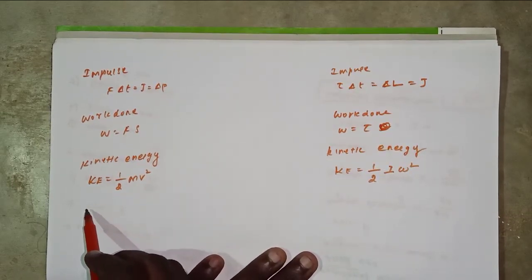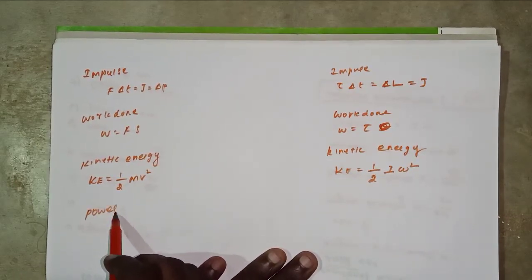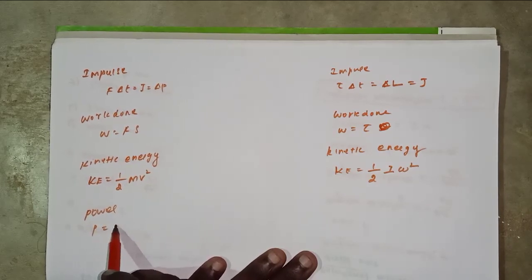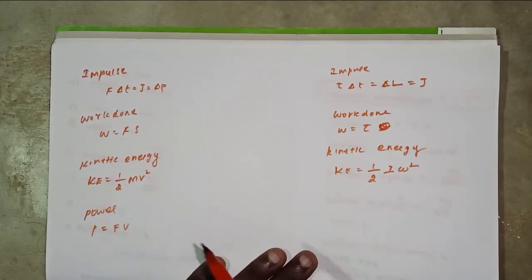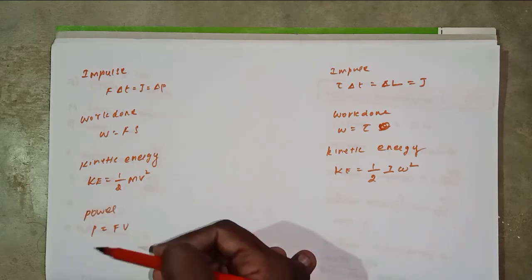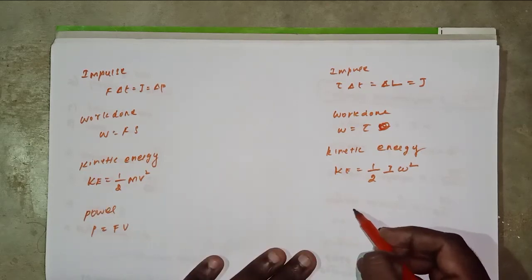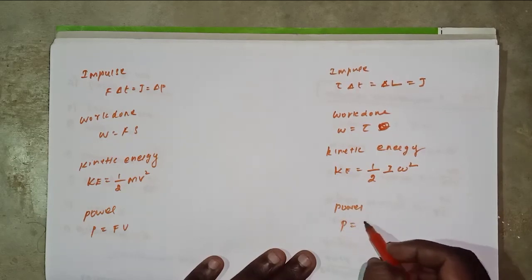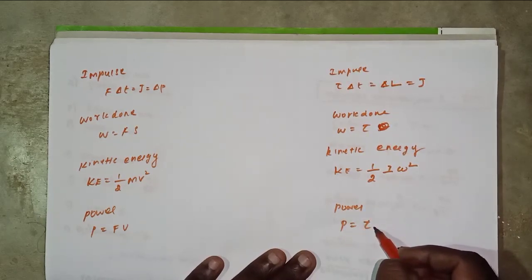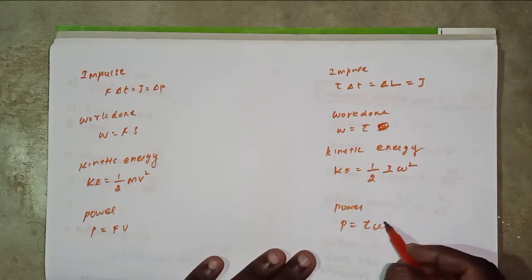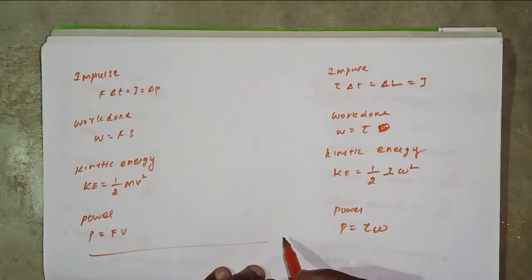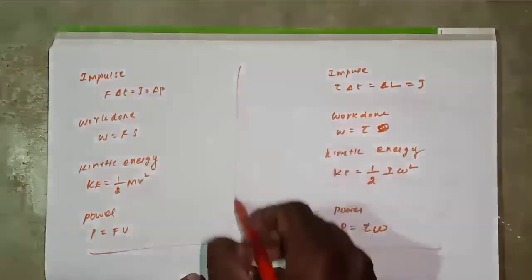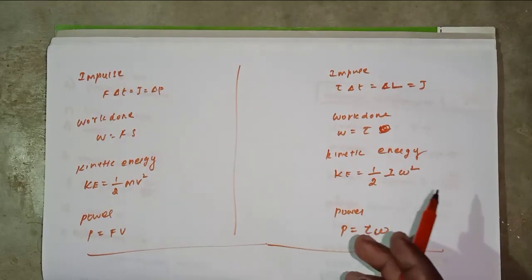Power P equal to F into v. And power equal to torque into omega. That's comparison of linear and angular rotational motions.